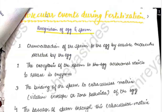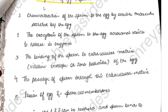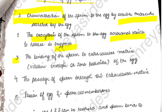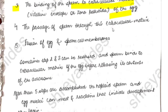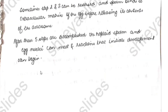The molecular events begin with recognition of egg and sperm. Chemoattraction is the key term — chemoattraction of sperm to the egg by soluble molecules secreted by the egg. This is followed by exocytosis of the sperm's acrosomal vesicle to release enzymes, binding of sperm to the extracellular matrix (vitelline envelope or zona pellucida) of the egg, passage of sperm through the extracellular matrix, and finally fusion of egg and sperm cell membranes. Sometimes steps 2 and 3 are reversed.